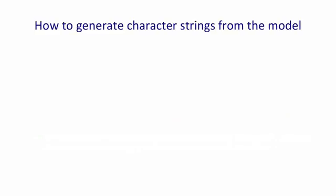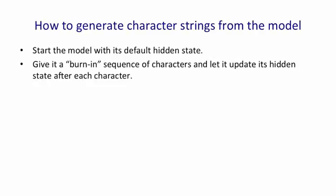Once the model's learned, you can see what it knows by generating strings from the model. Of course, you have to be very careful not to over-interpret what it says. The way we generate strings is we start in the default hidden state. We then give it a burn-in sequence. We feed it characters and let it update its hidden state after each character.